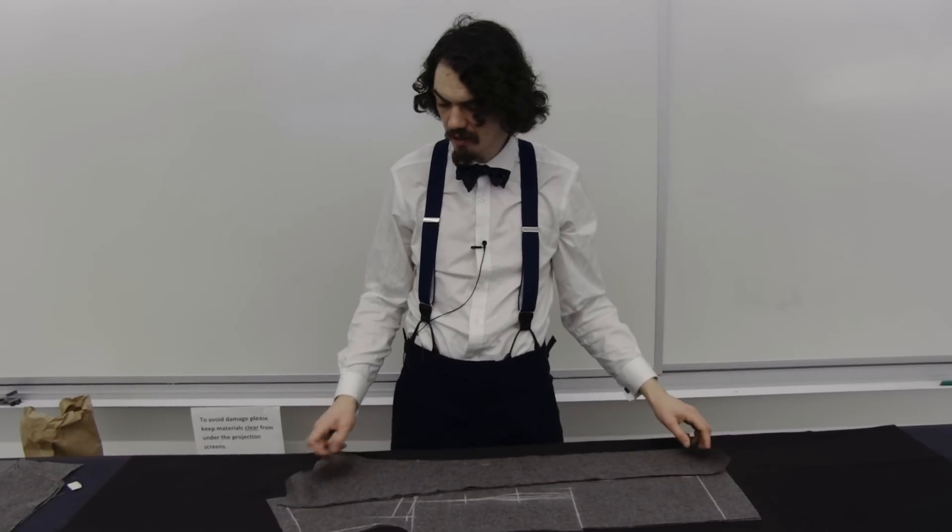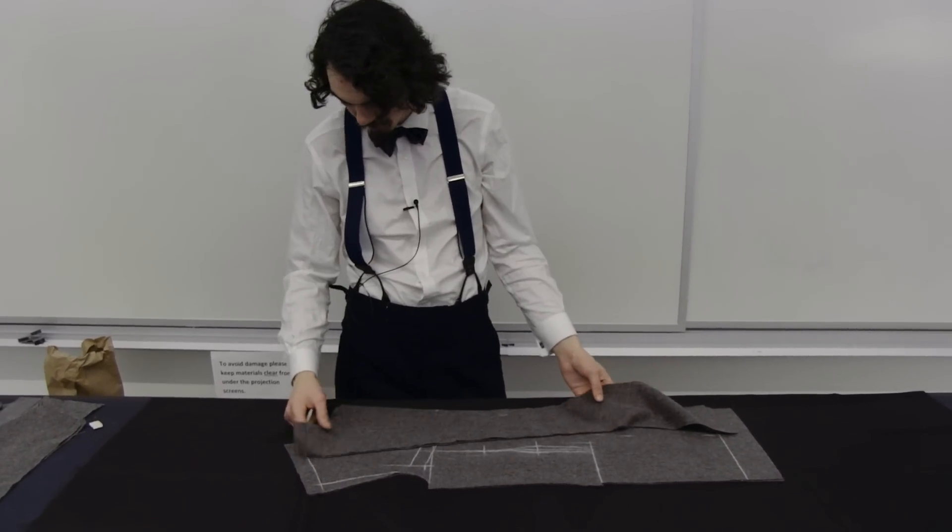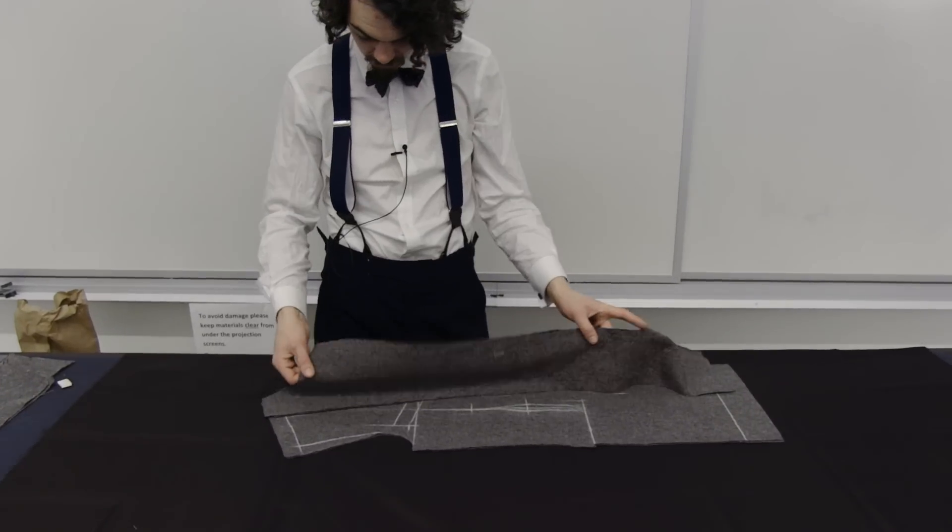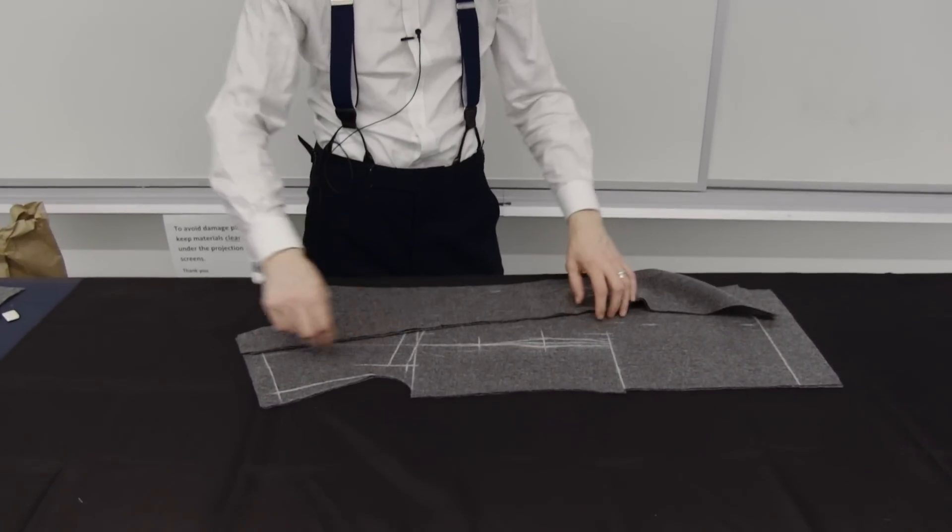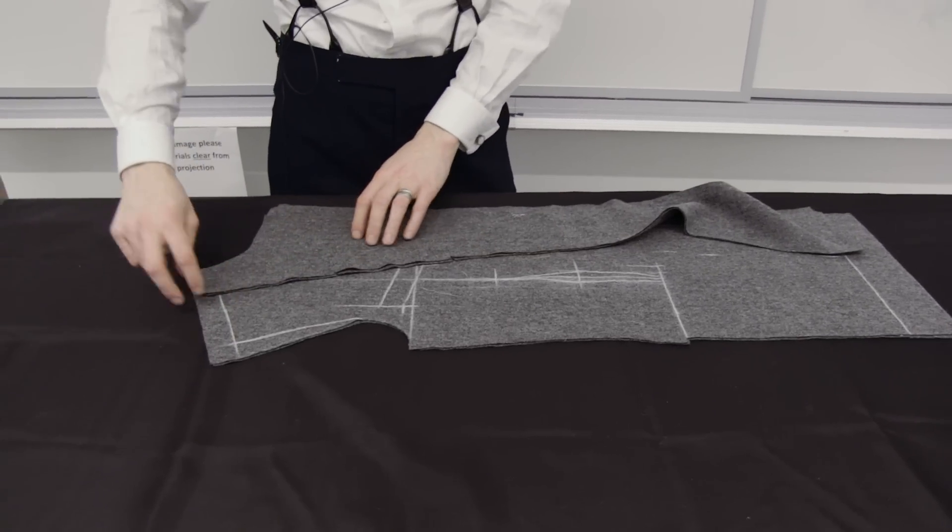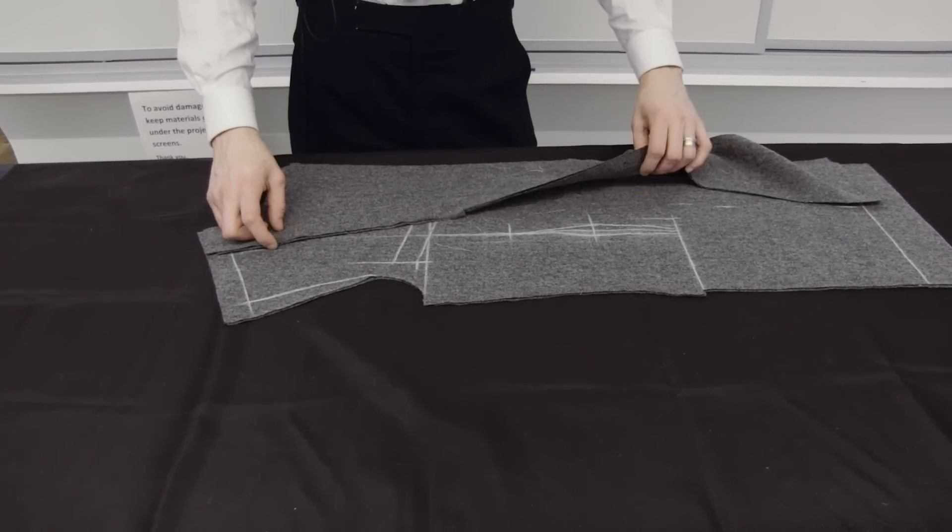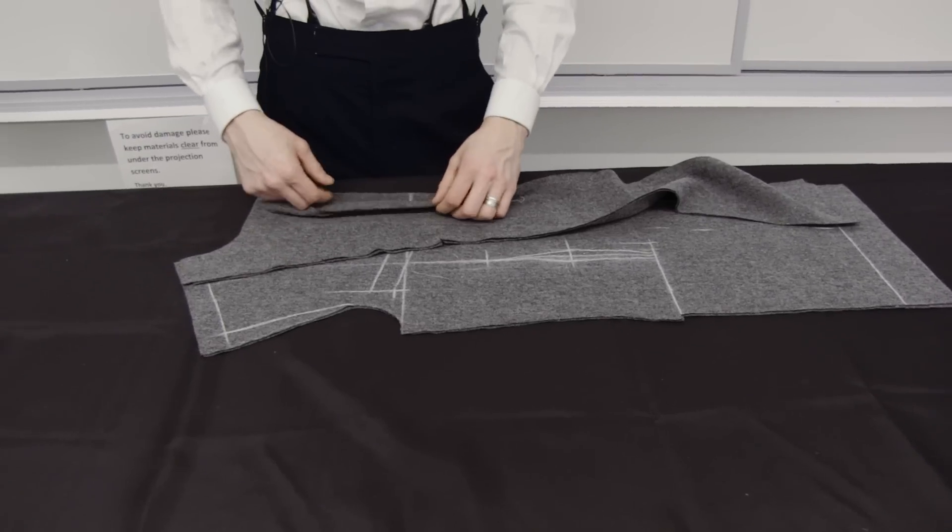Next we're going to look at how to cut the linings. We take our facing and lay it on our forepart. We want to have a look and see the width through the shoulder here. We want to take up at least a third of a shoulder width with the facing. Come over and make sure that you have enough cloth that's going to cover at the edge of the lapel.